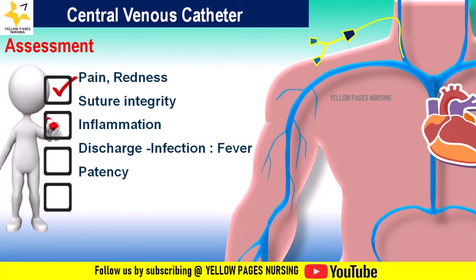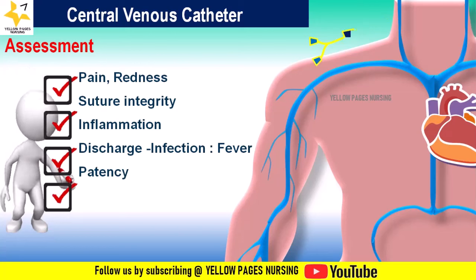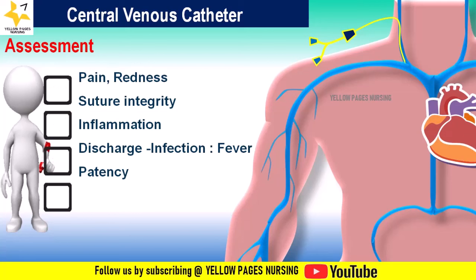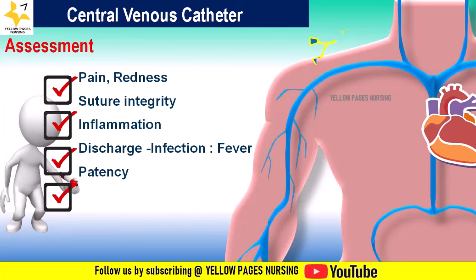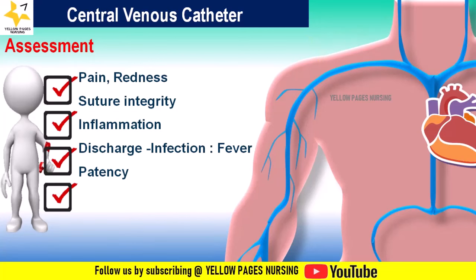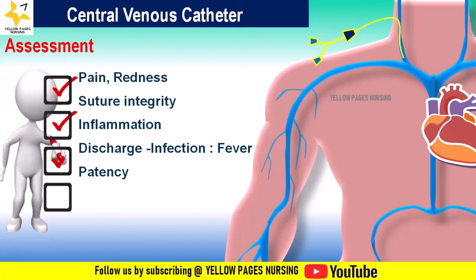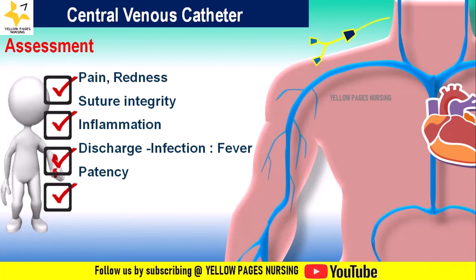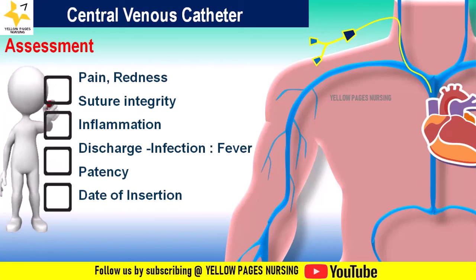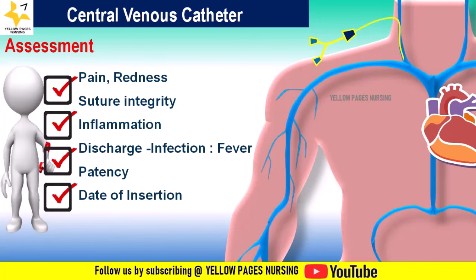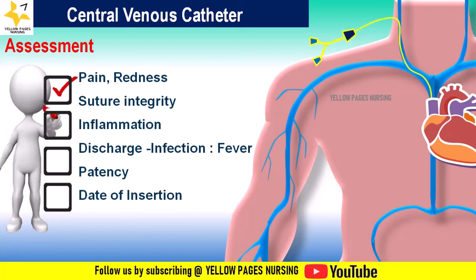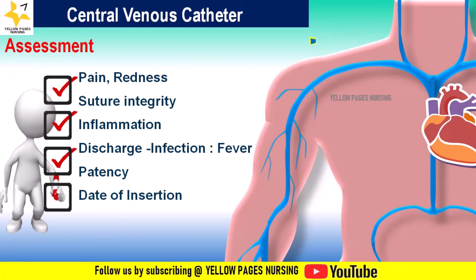Patency is monitored periodically to ensure the unobstructed functioning of the central venous catheter in order to administer fluids, medications, or for other treatments. Next is assessment of the date of insertion: recording this is important for patient care and safety, and every institution has its own policy for either change or removal of the central venous catheter.